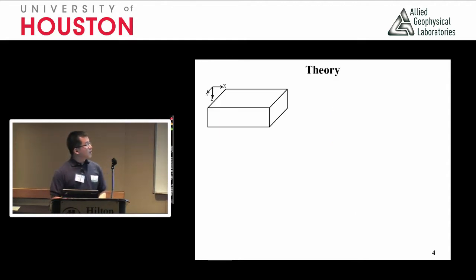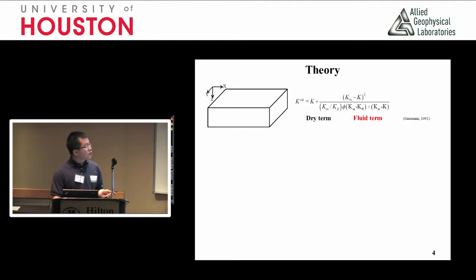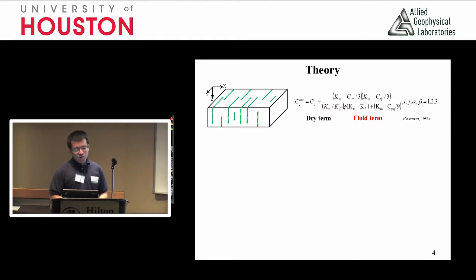Suppose we have isotropic rocks — everybody knows how to do the fluid substitution with Gassmann's equation, which takes the dry and saturated bulk moduli. However, if we have fractures, for example one set of vertical fractures, this kind of equation won't work. What is less well known is that Gassmann actually published his equation in terms of anisotropic cases, but he introduced the equation in terms of stiffness instead of bulk moduli alone.